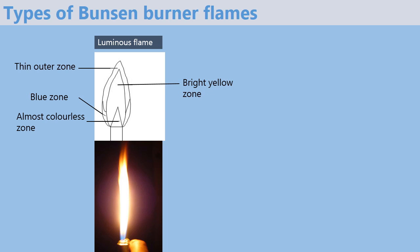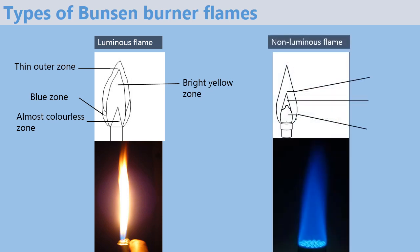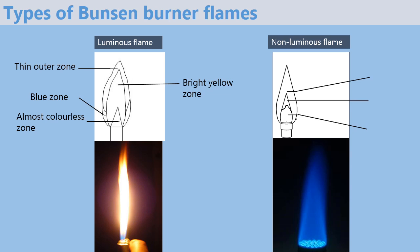The next type of flame is known as the non-luminous flame, formed when the air hole is open. This type of flame does not produce much light. It has a plenty of supply of air and that's why it is blue in color. It is usually hotter than the luminous flame.